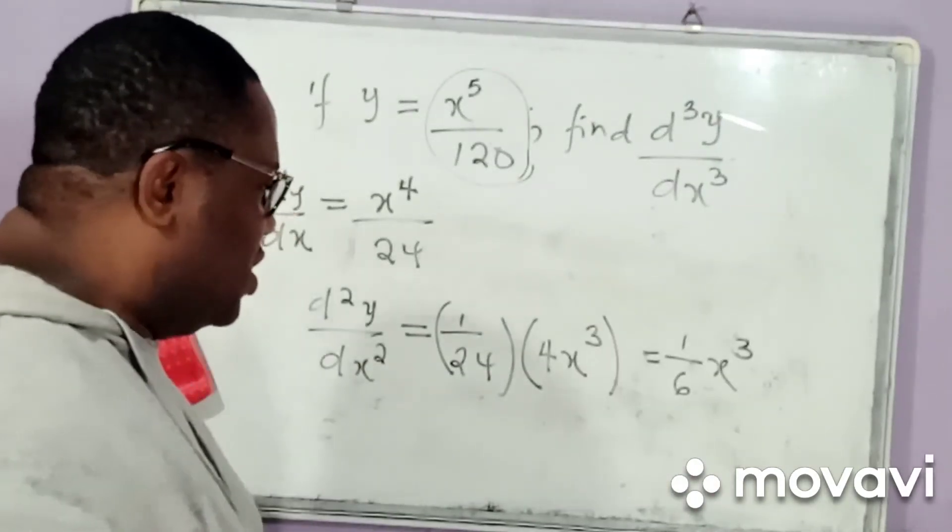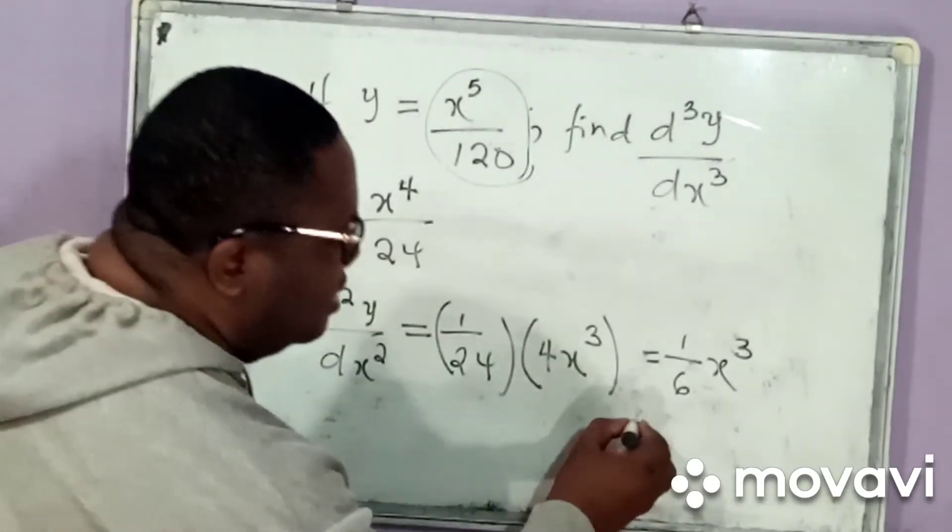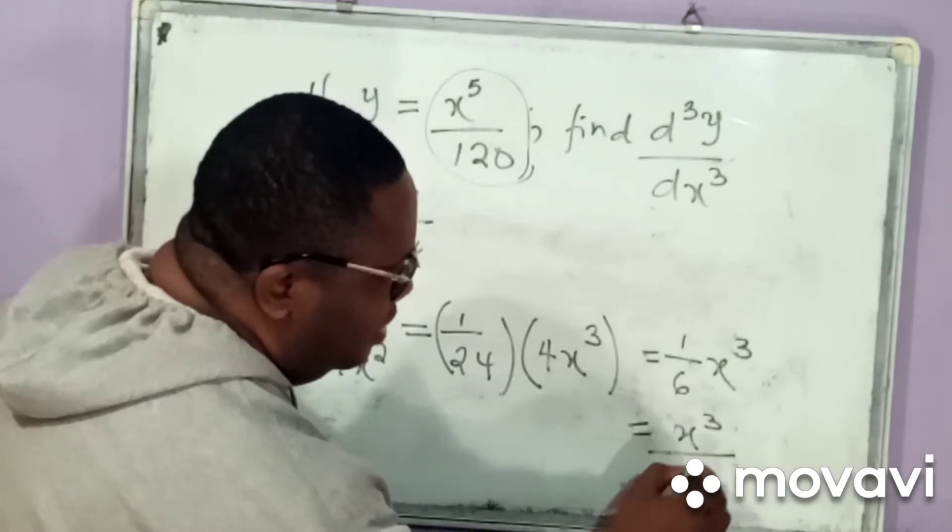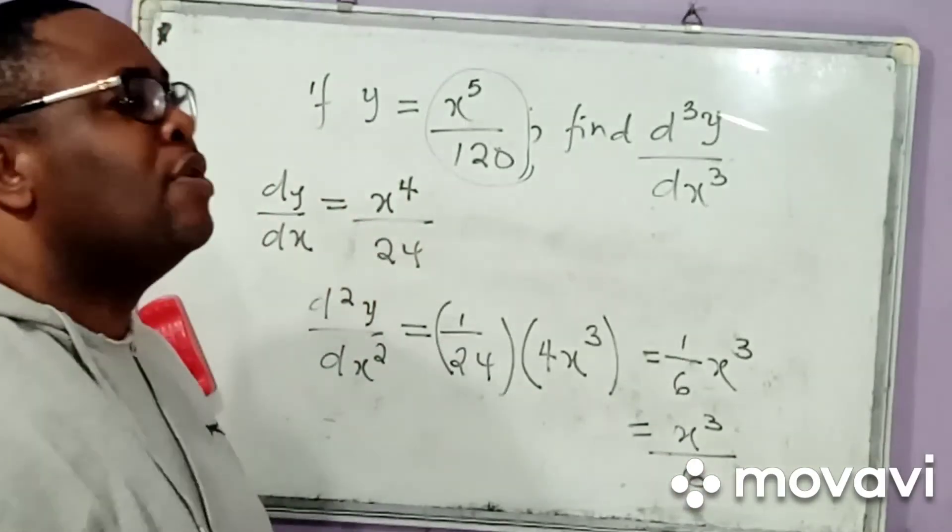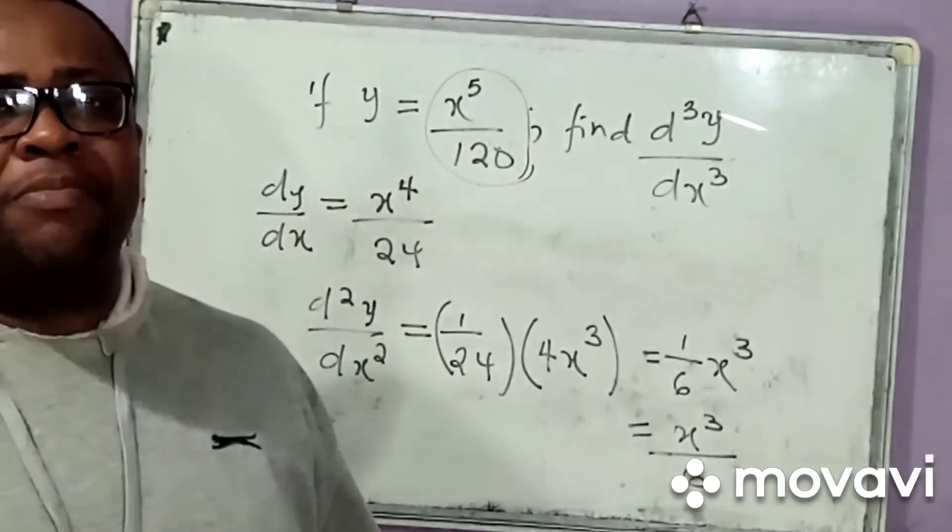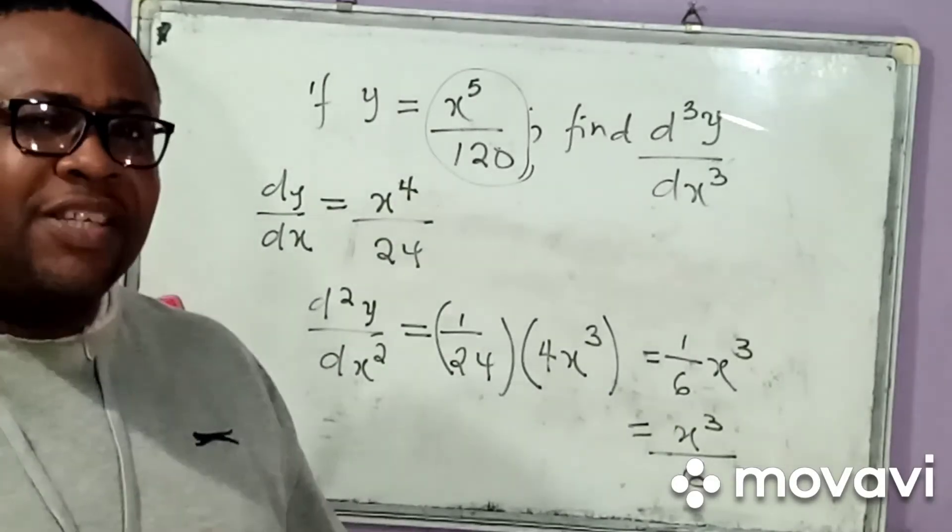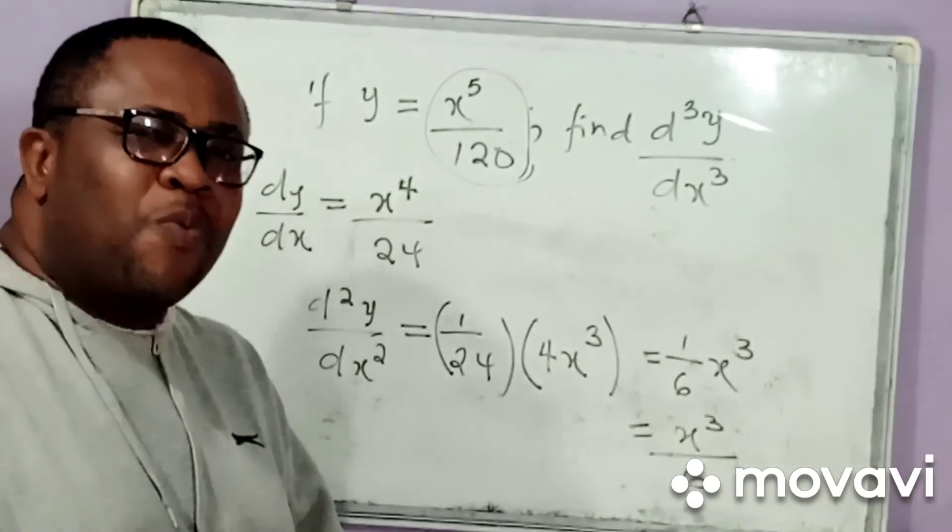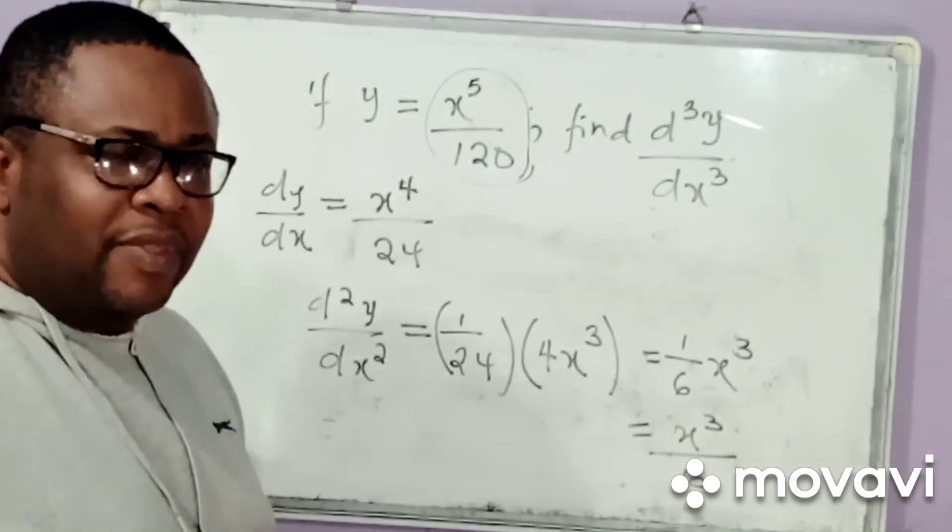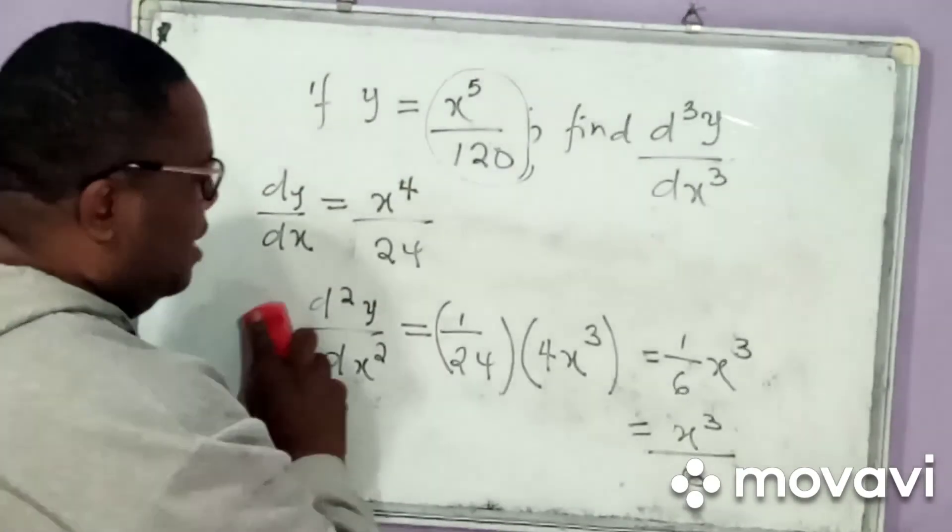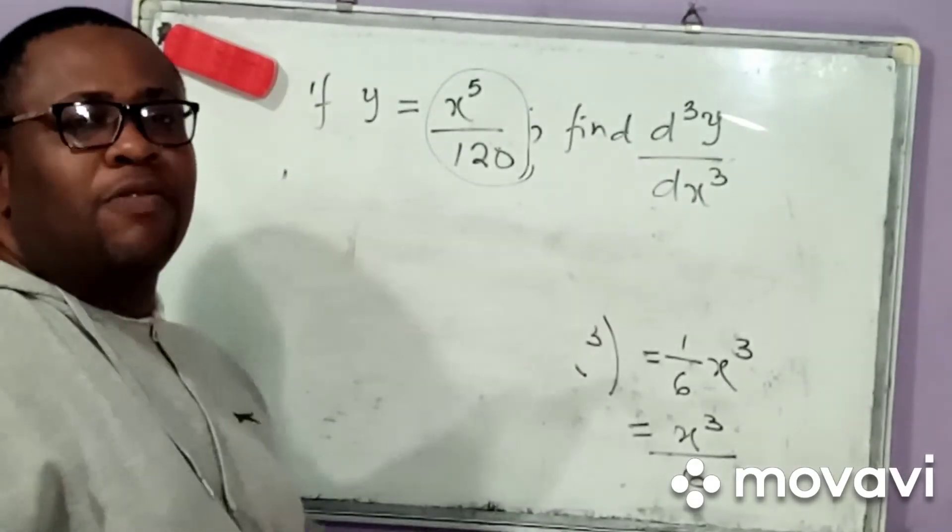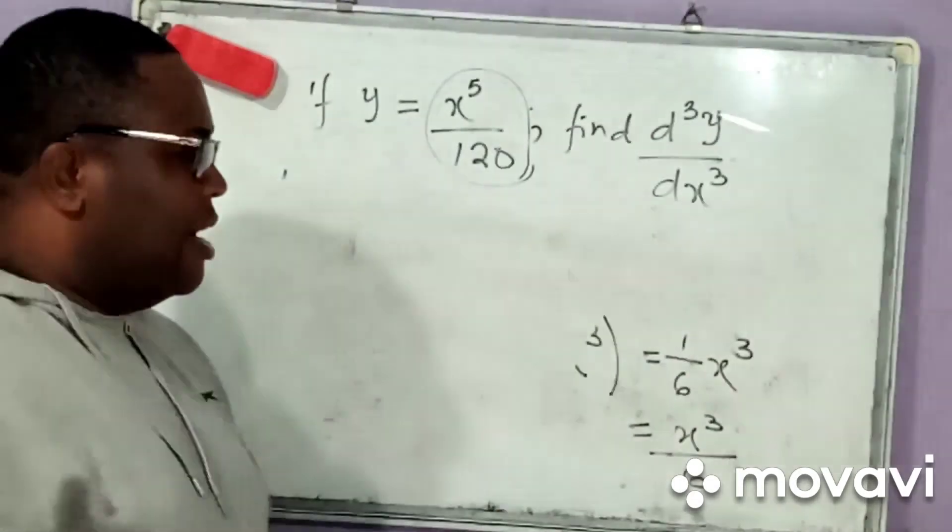And, of course, this can simply also be written as x cubed divided by 6. So, you begin to see something now, that our second derivative, we call this the second derivative, or what we call d squared y by dx squared. So, I can take my pen and bring down that information here. We have been asked to find d cubed y by dx cubed.